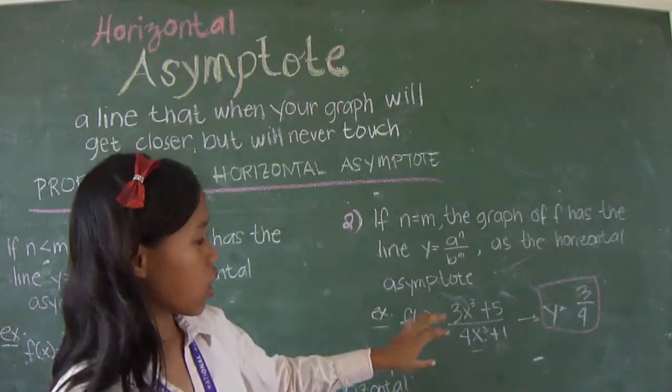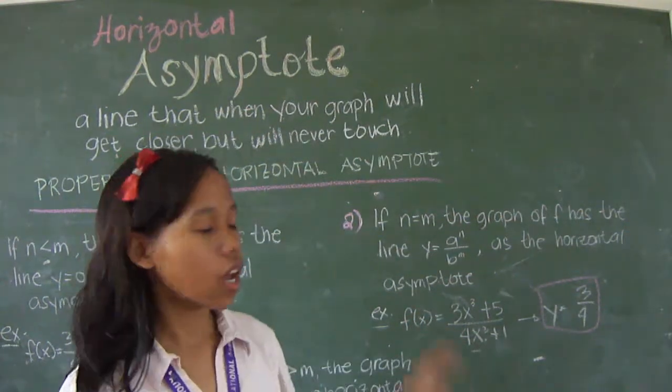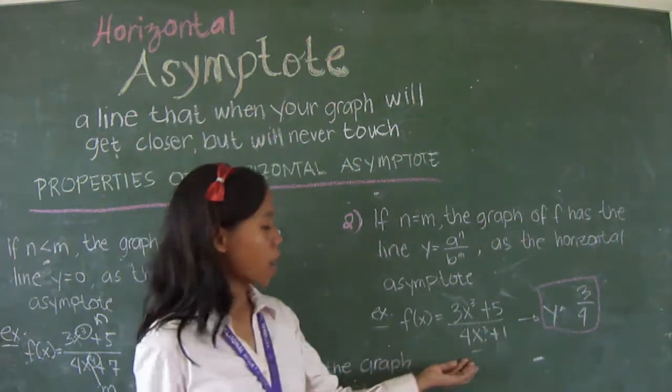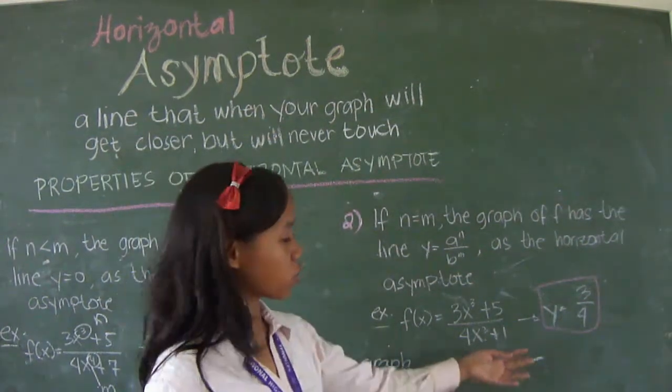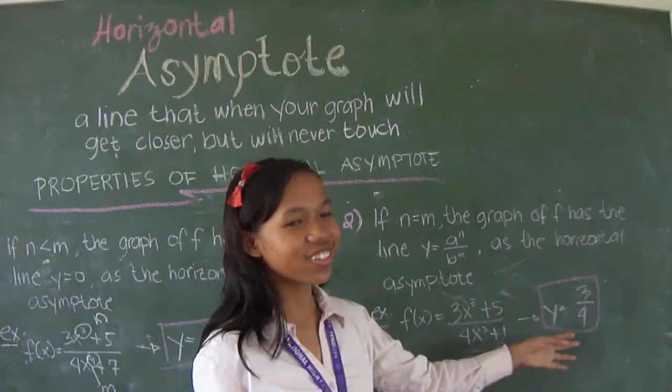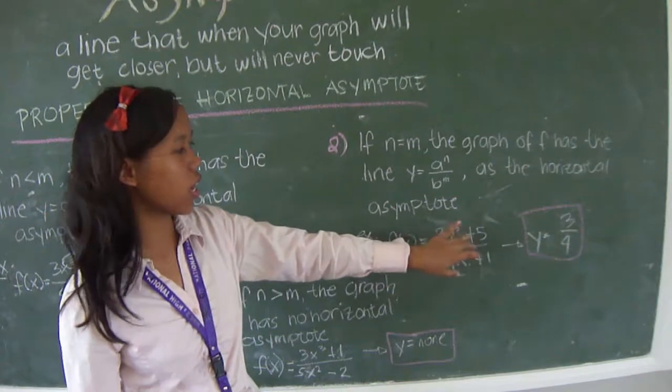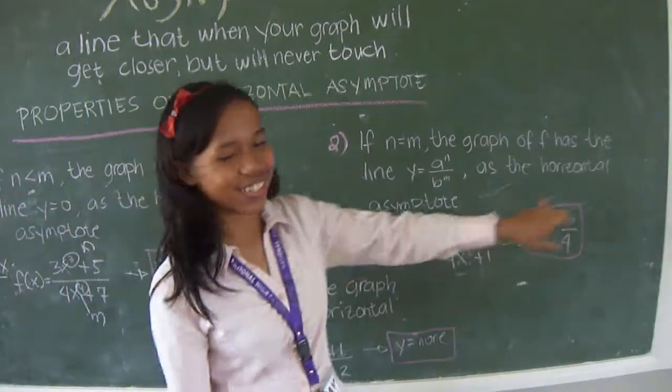Example is f of x equals 3x to the power of 3 plus 5 over 4x to the power of 3 plus 1. The answer is y equals 3 over 4. The n is 3 and the m is 3.